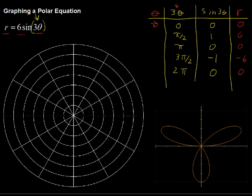But what would we have to multiply by 3 to get pi over 2? Well, that's pi over 6. So if theta is pi over 6, then 3 times theta is pi over 2.